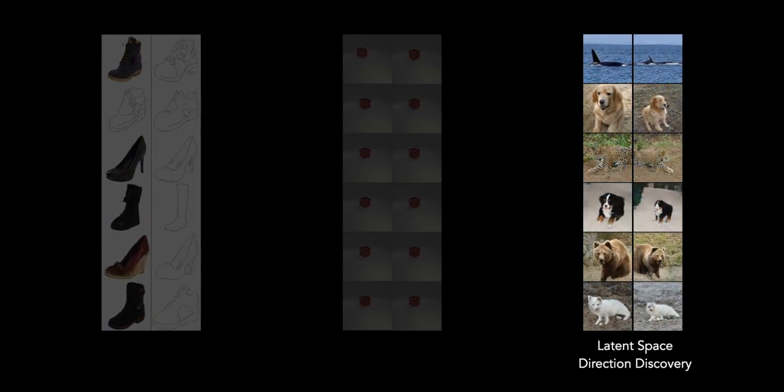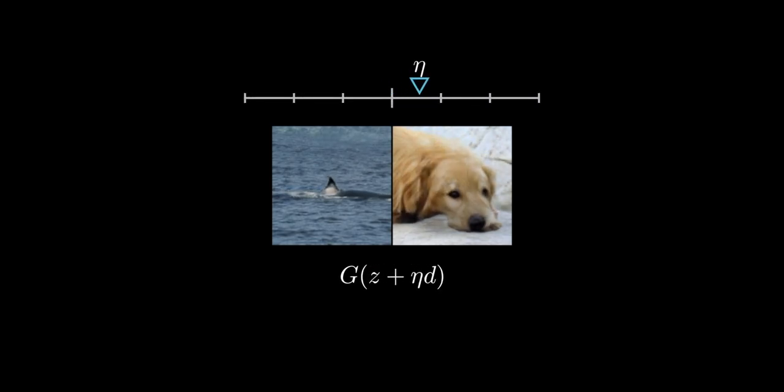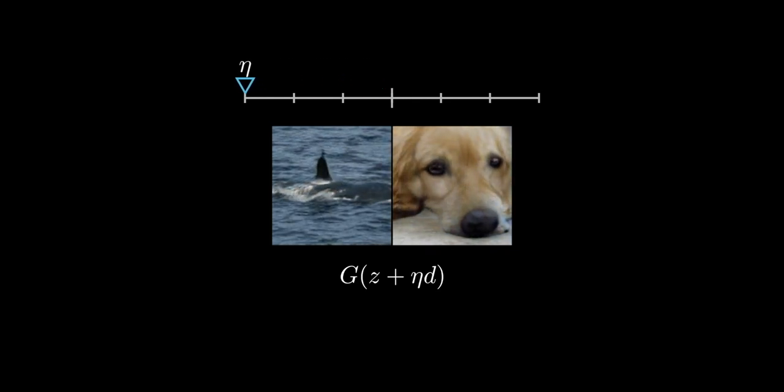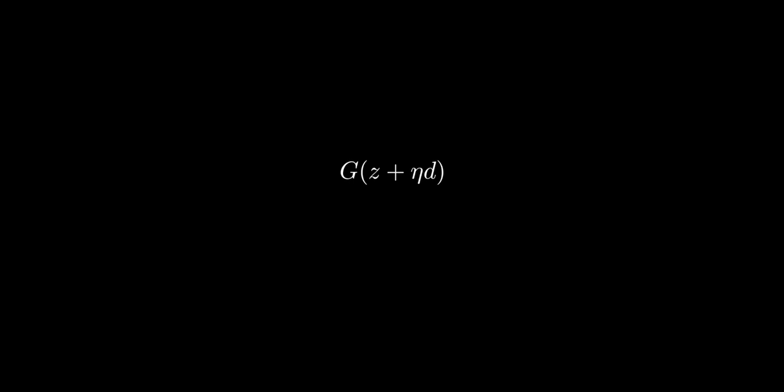All right, finally, we'll move on to showing direction discovery results in BigGAN. Vector addition is a popular way to manipulate images in generative models. Here it's done by moving in latent space in a direction d with a step size eta. Can we discover interpretable disentangled directions in an unsupervised fashion? To approach this problem, we randomly initialize a matrix of directions A. Here, each column of A is a direction in z-space that we'll learn.